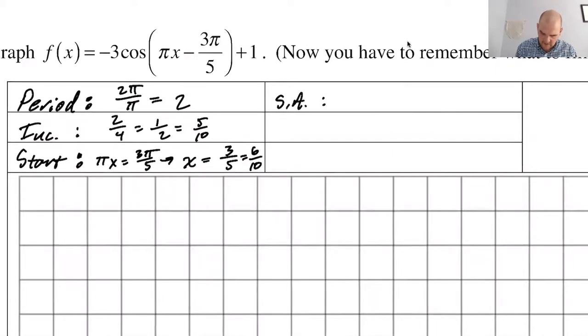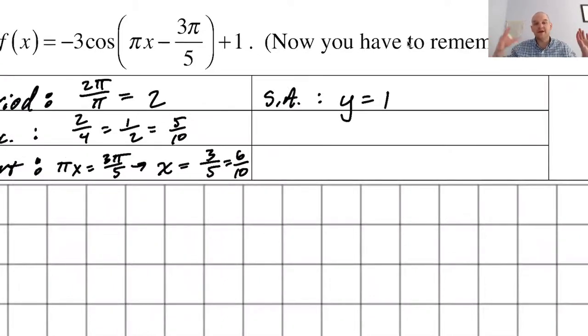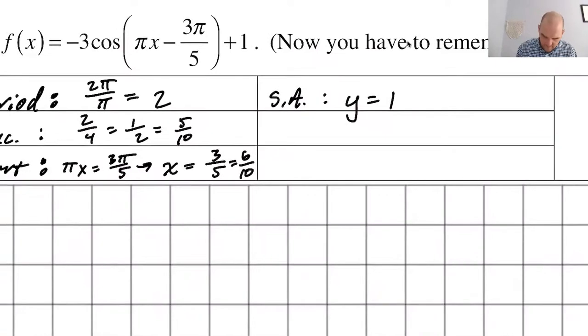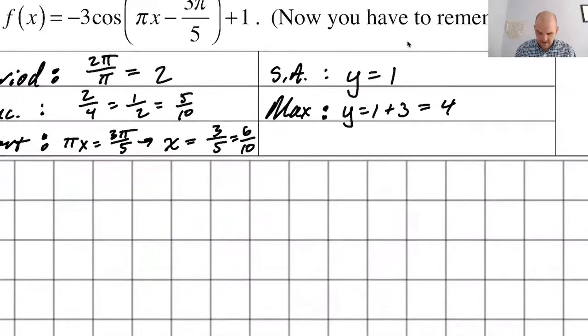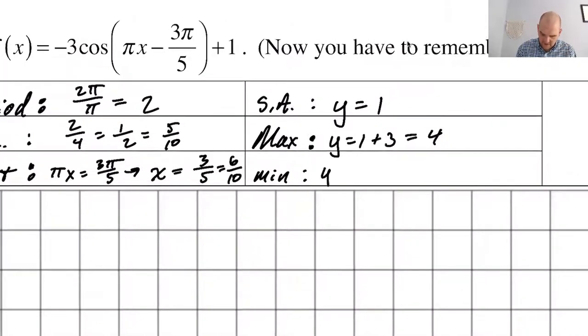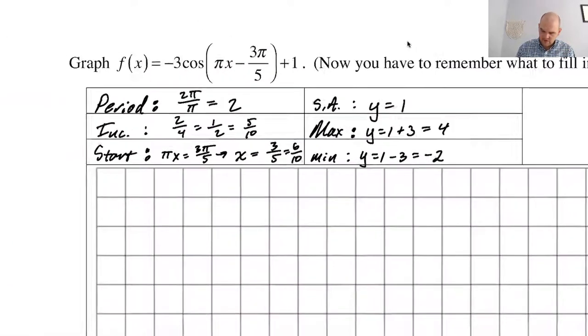Sinusoidal axis. That's going to be y equals 1 because of that plus 1 at the end. Maximum. So we're going to start at 1 and we can add 3 to get 4 because the amplitude is 3. The value of a is negative 3, which means we're reflecting our pattern and the amplitude is 3. So here we're going to be at 1 and we go down 3. It's going to be negative 2.